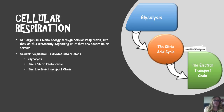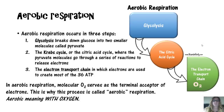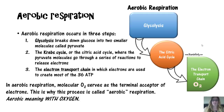All organisms make energy through cellular respiration, but they do this differently depending on whether they are anaerobic or aerobic. Cellular respiration is divided into three steps: glycolysis, the TCA or Krebs cycle, and the electron transport chain or oxidative phosphorylation. In aerobic respiration: glycolysis breaks down glucose into two pyruvate molecules; the Krebs cycle is where pyruvate — converted to acetyl-CoA — goes through reactions to release more electrons; and the electron transport chain creates most of the 36 to 38 ATP.